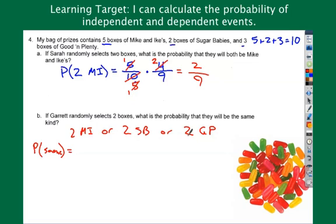So, the probability of the same is going to equal these three probabilities together. So, the two Mike and Ikes we've already done. That's five tenths times four ninths. We'll go through the math later. Or, I should jump out of you. That's a plus. Two sugar babies. All right. So, I've got two boxes of sugar babies to begin with. Now, this is a separate problem. Once I've done this, I assume I'm back to ten. Because these are two different things. Right? I wouldn't draw two Mike and Ikes, then go back in and try and get two sugar babies.